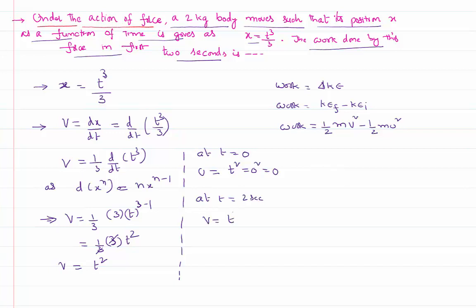Final velocity is also t square. But in the place of t now I have to write 2, 2 square, that is equal to 4. Let us put this initial and final velocity in the equation that we have written.